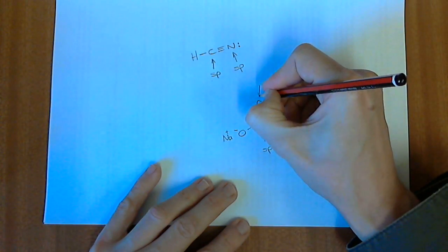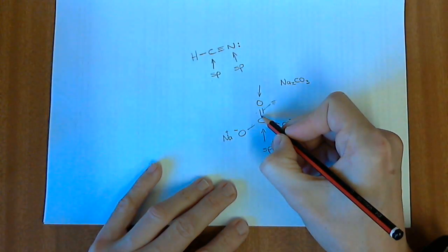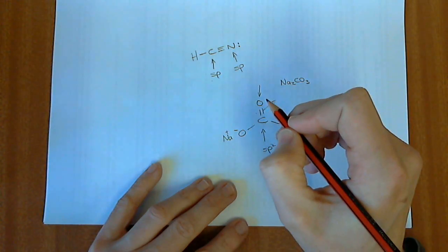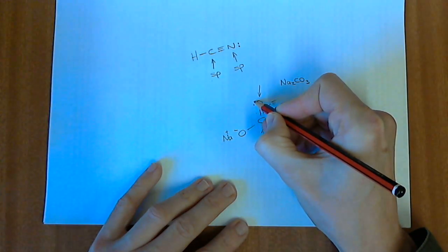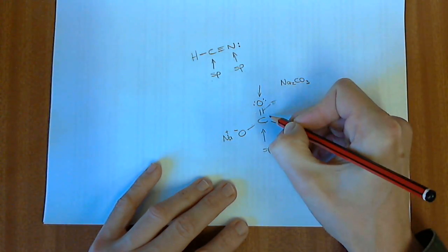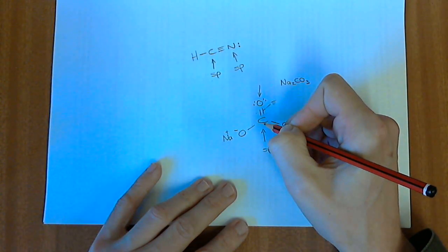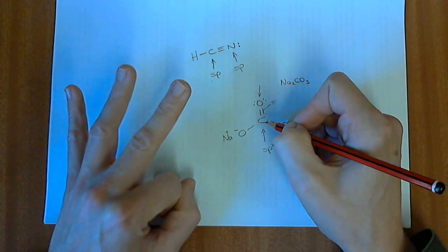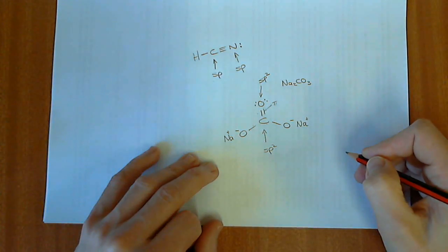This oxygen over here also has a hybridization associated with it. There is one sigma bond there. And when we look at a molecule like this, we should be able to identify very quickly that this atom over here, the oxygen, has two lone pairs of electrons. So there's one sigma bond, two lone pairs of electrons. So three orbitals in total. It is also sp2 hybridized.